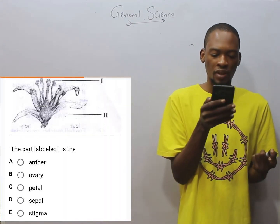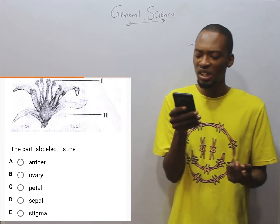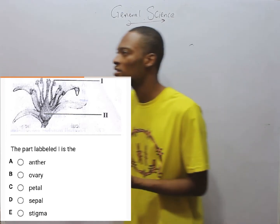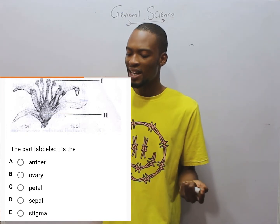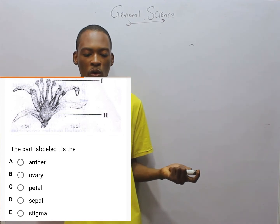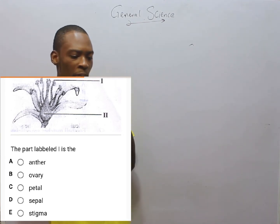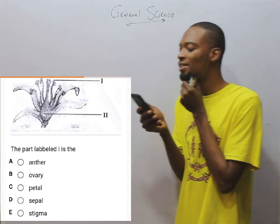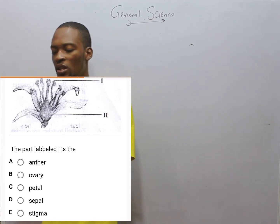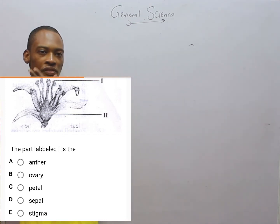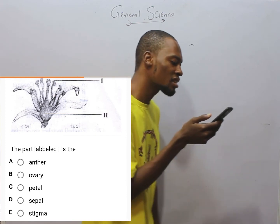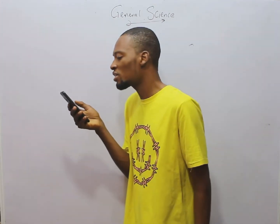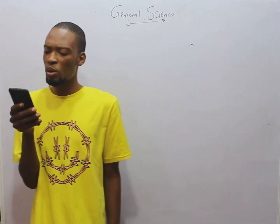The next question: the part labelled I is referred to as the anther. The main part of the flower is referred to as the stamen, and this stamen is made up of the anther and the stalk or filament which supports the anther. Remember, for pollination to occur, pollen grains must move from the anther to the stigma — we can call the stigma the female part of the flower. In this case, the part labelled I is the anther.